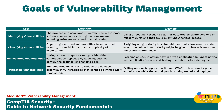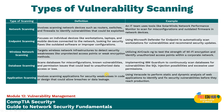Mitigating vulnerabilities means implementing measures to reduce the damage or potential of a vulnerability that cannot be immediately remediated. Mitigation efforts may include applying compensatory controls such as firewalls, intrusion detection systems, or more restrictive access controls to reduce the likelihood and impact of any exploits. For example, setting up a web application firewall (WAF) to temporarily prevent exploitation while the actual patch is being tested and deployed.